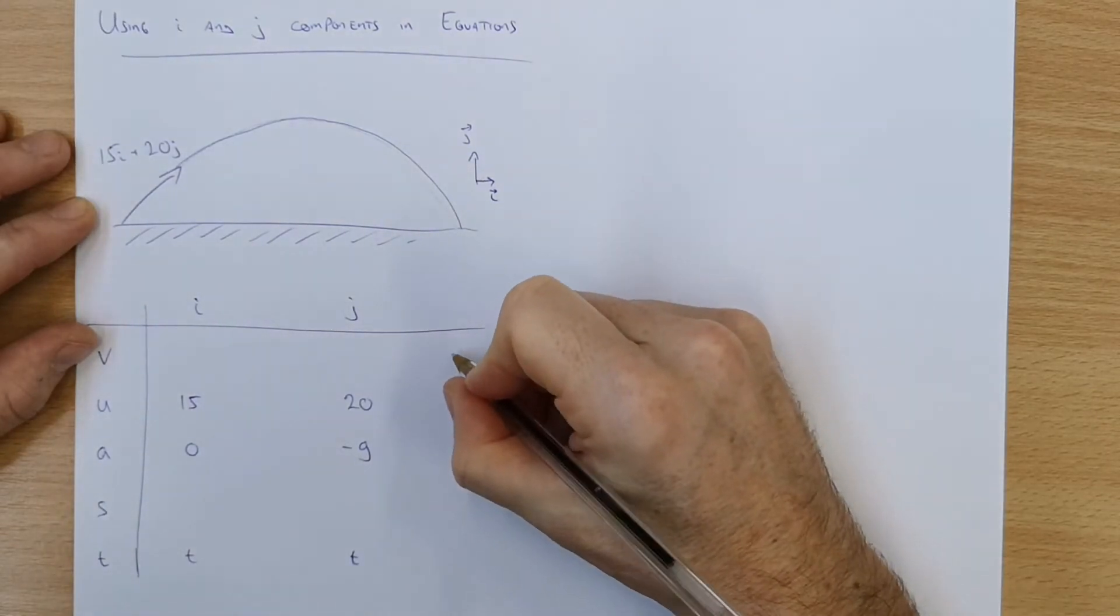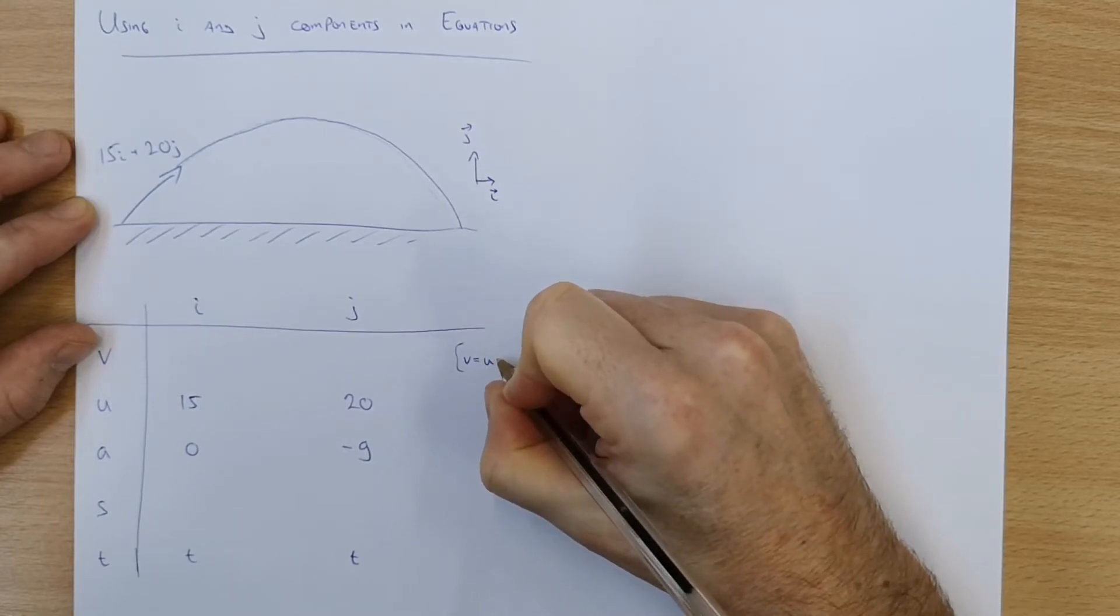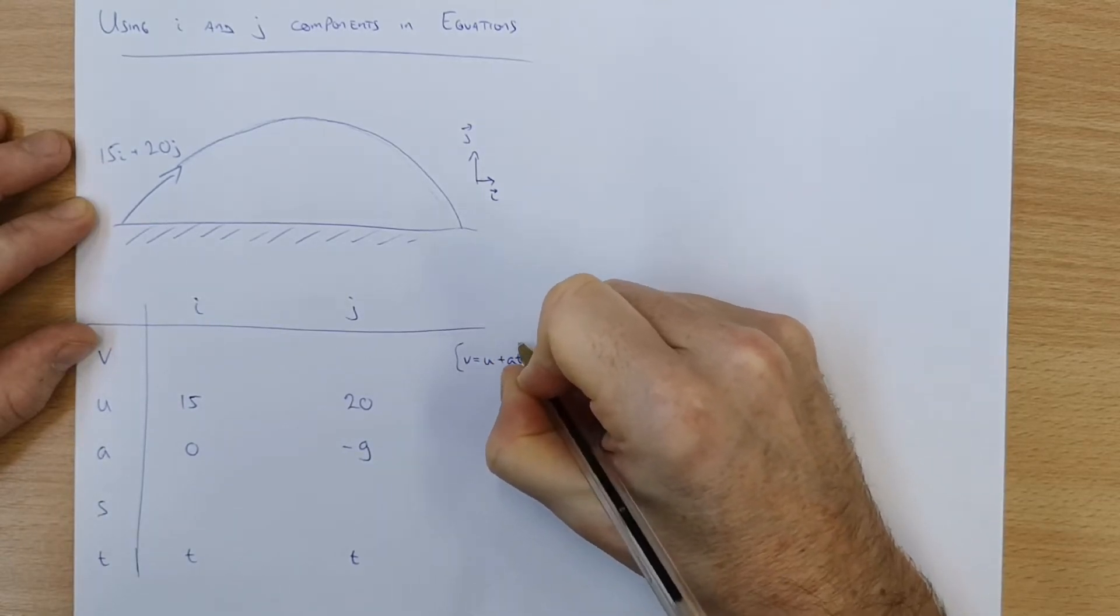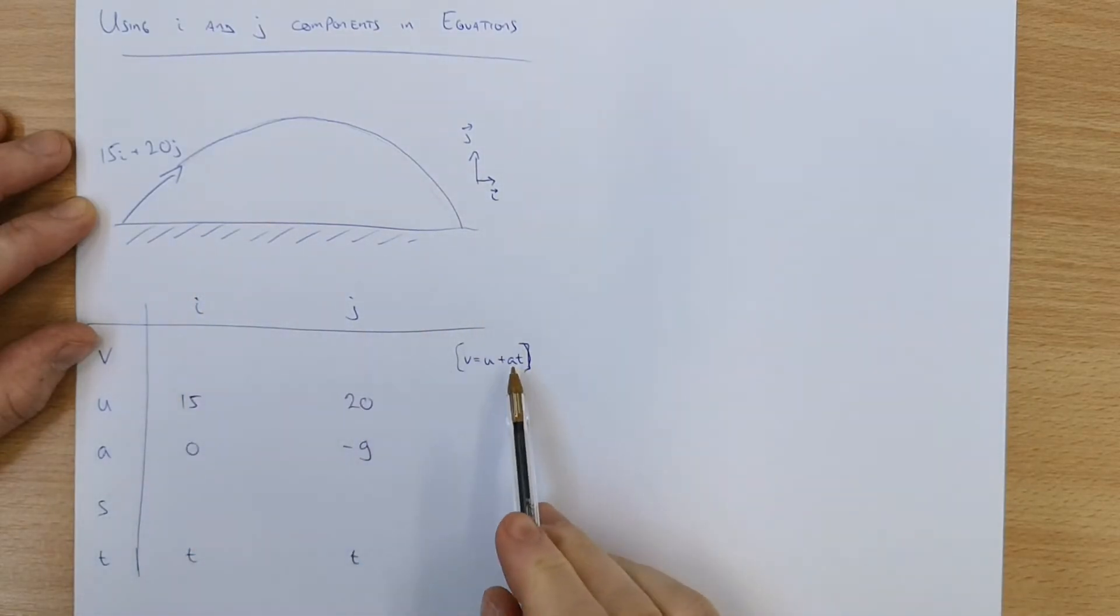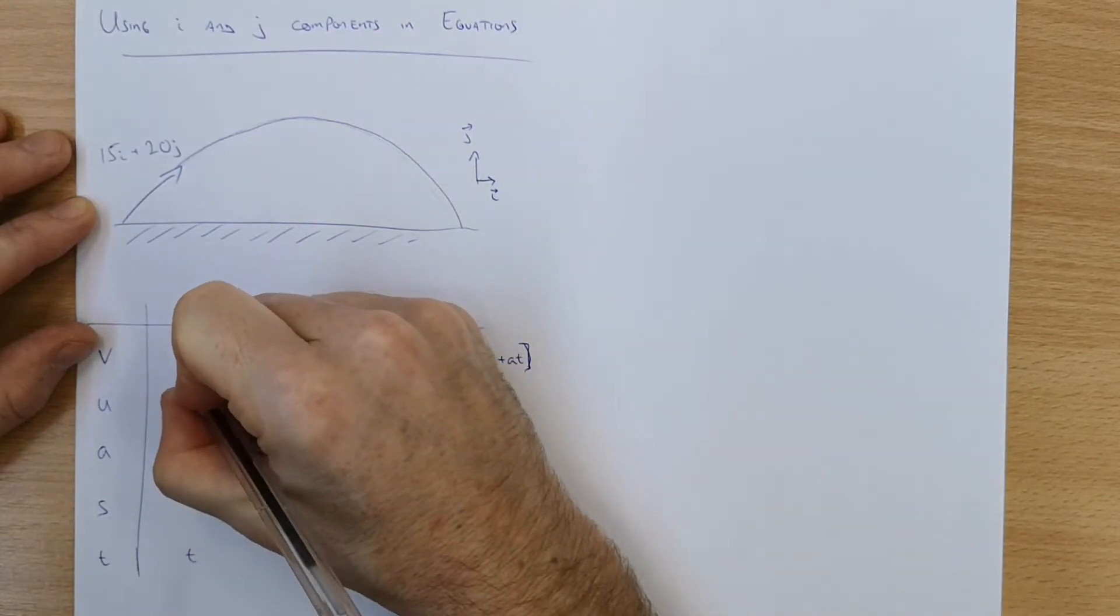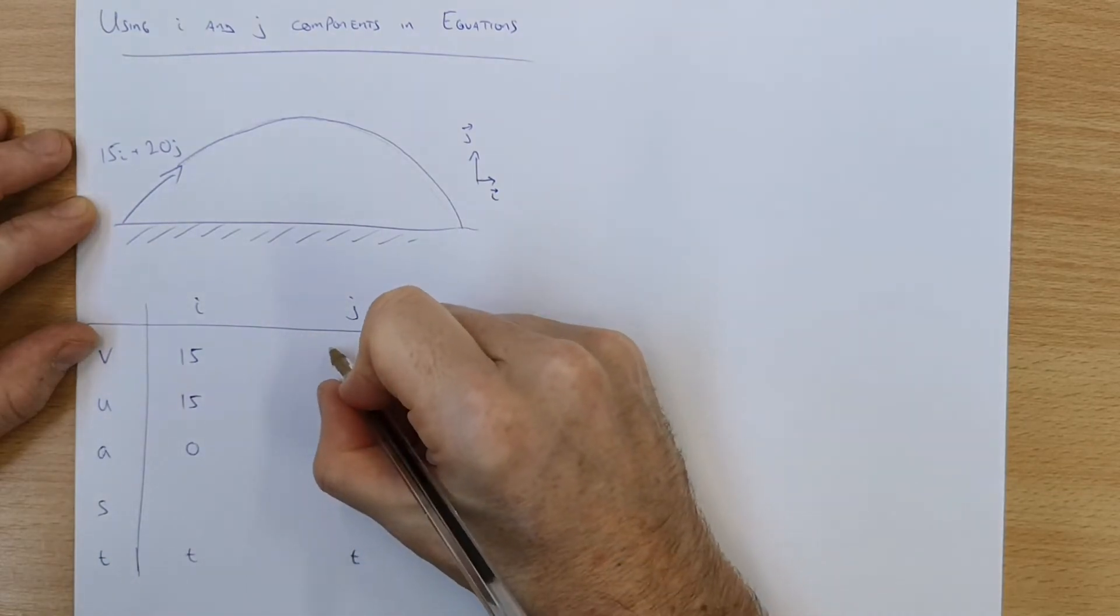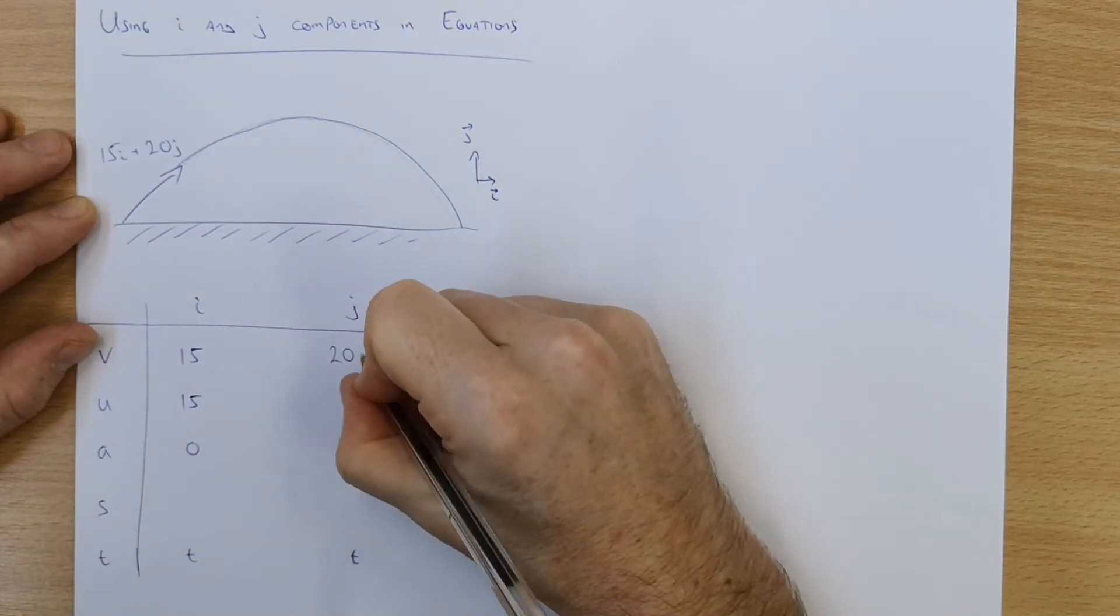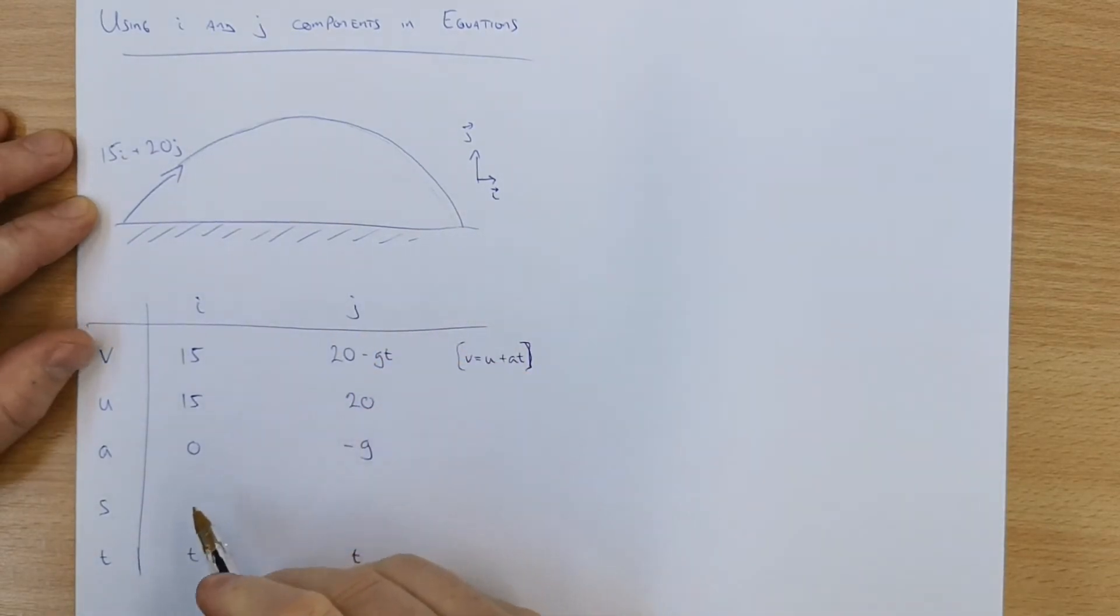Well for v we're going to use the equation v equals u plus at. So the nice thing is in the i direction a is zero so final velocity is going to be 15. It's going to be 15 the whole way across in the i direction. In the j direction it's going to be u plus at so 20 minus gt.